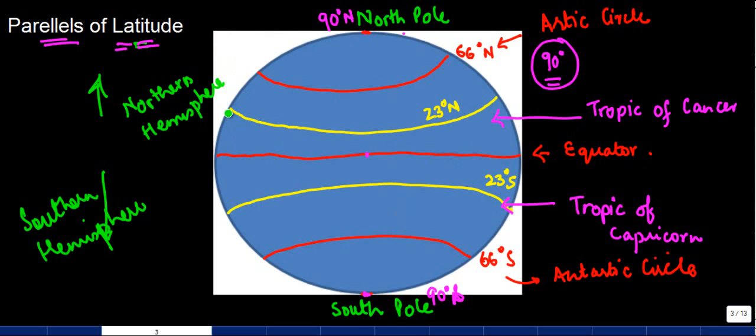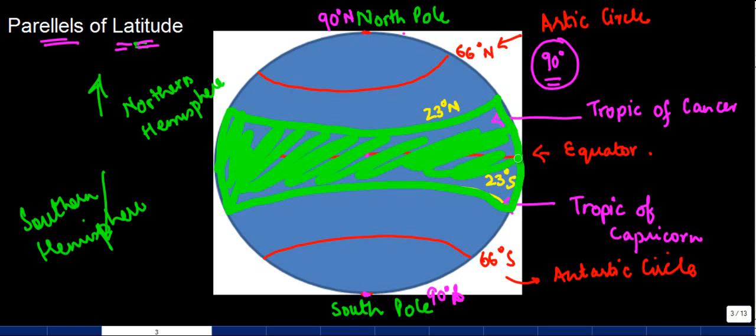Now, if you look at the area between 23 degrees North and 23 degrees South, which is this particular piece, what will happen is that the sun rays during the midday are exactly overhead on each of these latitudes.